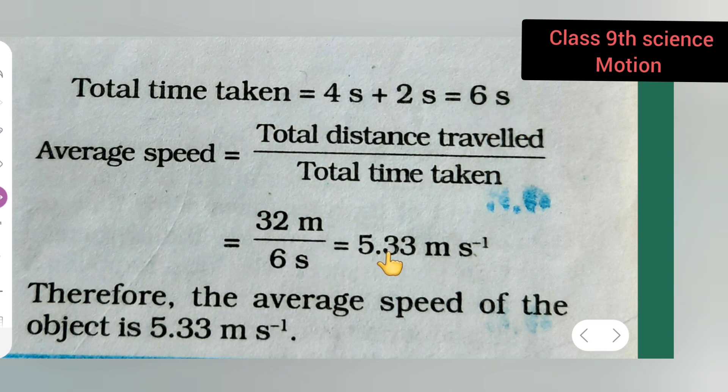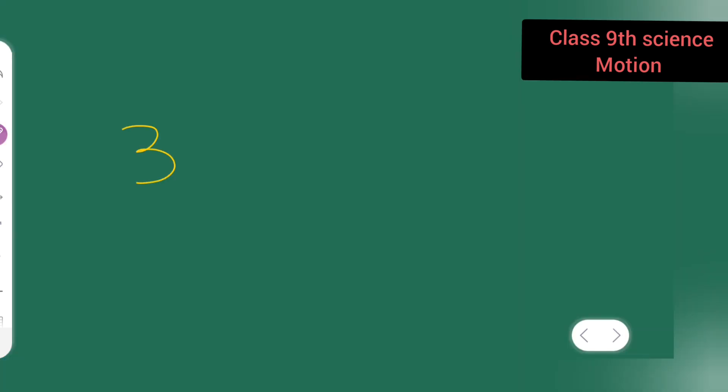Which is equal to this answer. Now how you get this answer is: first, 32 divided by 6.